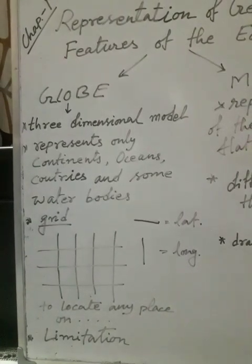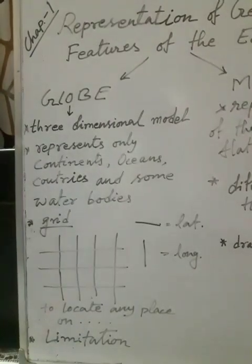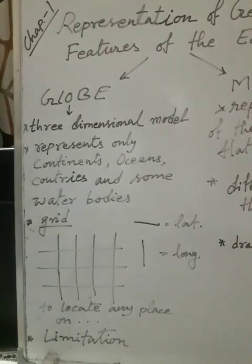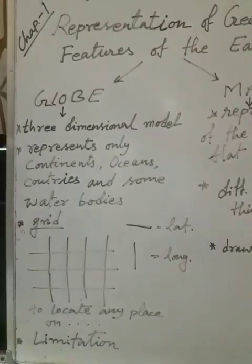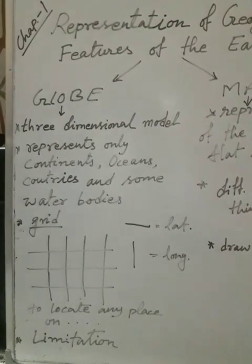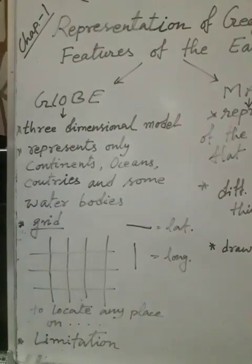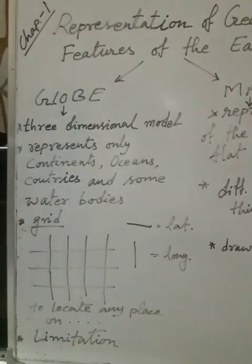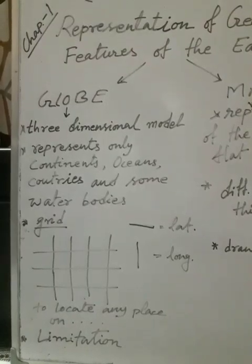Now the globe has some limitations. First, it gives very limited information about Earth — our Earth is very big and has many features, but the globe only shows a little. Another limitation is that a globe is very heavy and circular in shape, which is not easy to carry. During travel, if we want to carry a globe, it is not easy. So globe is not easy to carry or handle, and it gives us very limited information — these are the drawbacks of a globe.